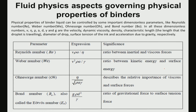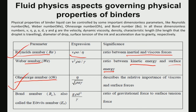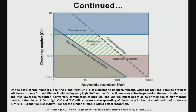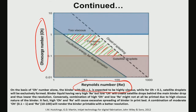From fluid dynamics, key dimensionless numbers are: Reynolds number (ratio of inertial to viscous forces), Weber number (ratio of kinetic energy to surface energy), Ohnesorge number (relative importance of viscous and surface forces), and Bond number (gravitational force to surface tension force). Plotting Ohnesorge number against Reynolds number gives the printable fluid characteristics.